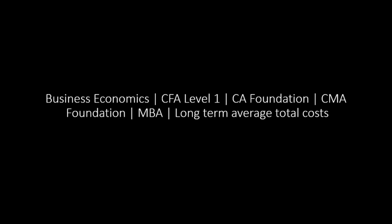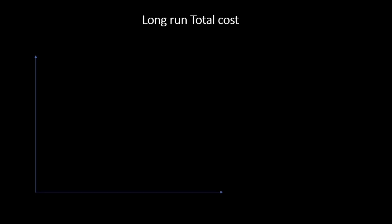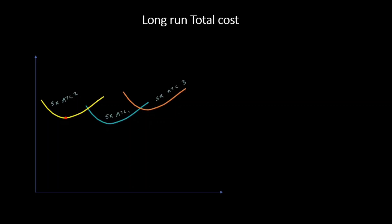In the previous videos we talked a lot about short-run average total costs and long-run average total costs. So we learned about short-run average total costs. For example, these are my series of short-run average total costs, and then I take the minimal points for all of these average total cost curves and join them — I get my long-run average total costs.